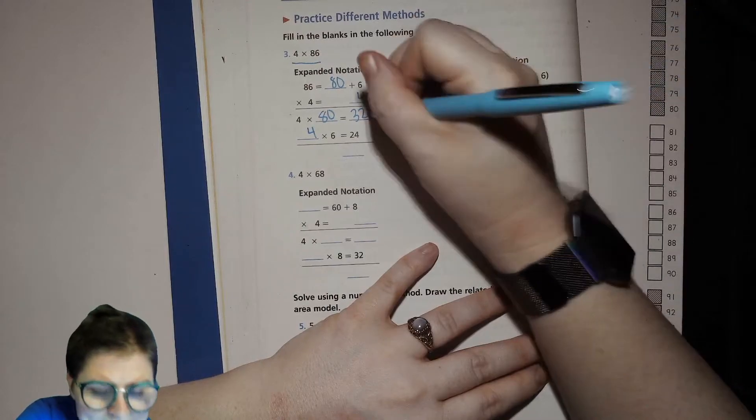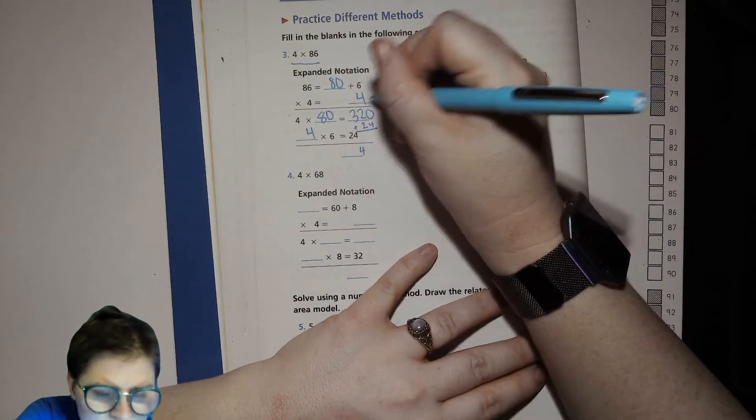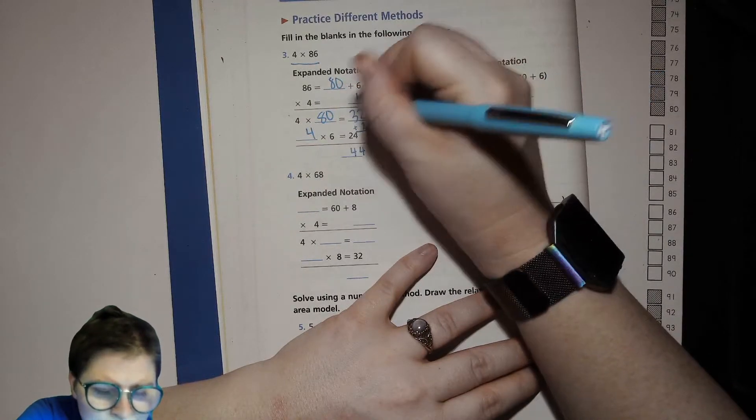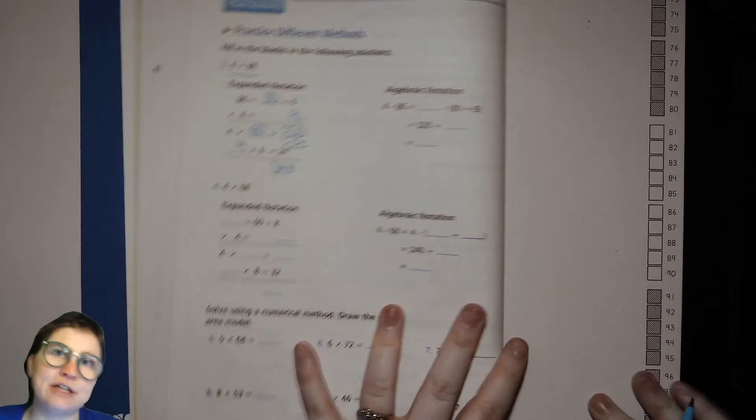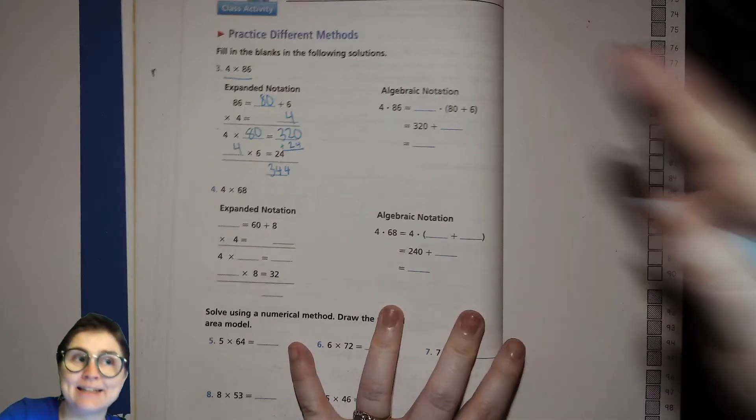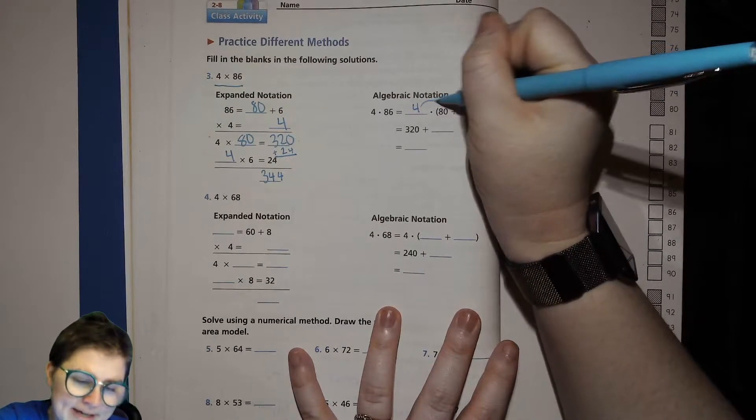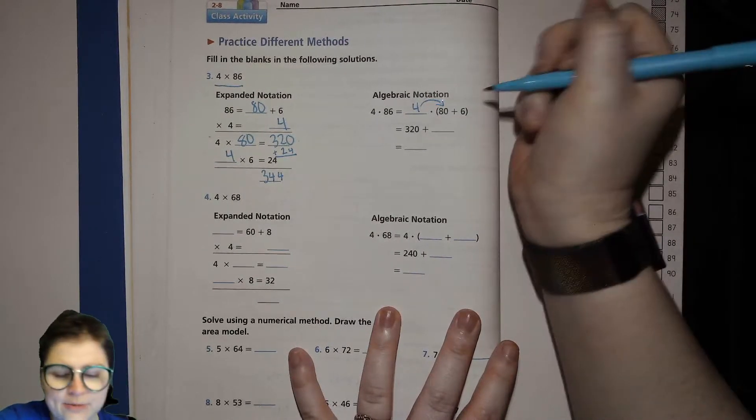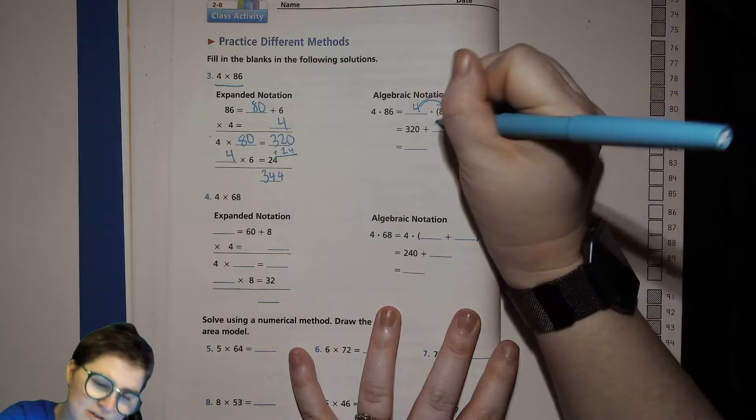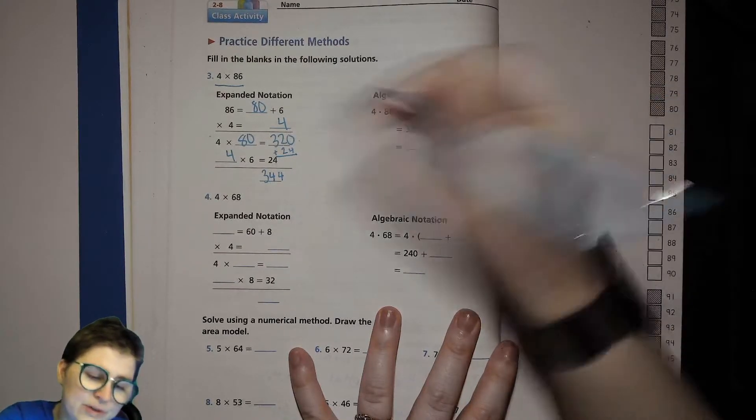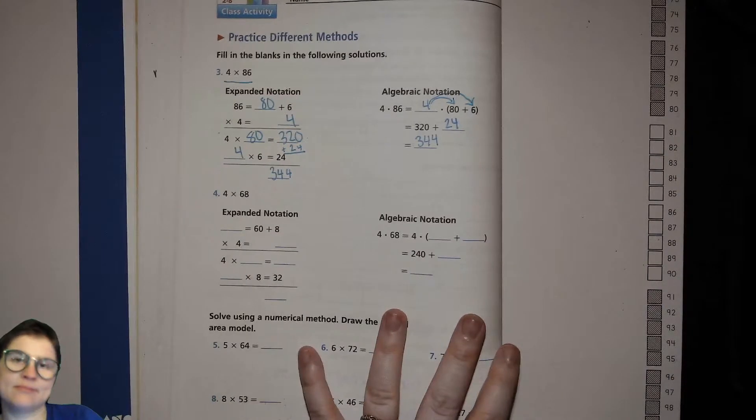And then we're going to add those up. Now I wish they had lined this up nicer, so I'm just going to put 24 right there so I don't mess it up. 0 plus 4 is 4, 2 plus 2 is 4, 3 plus nothing is 3. Now the algebraic notation, remember we're talking about passing things out to everybody. 4 times 86, we'll have our 4 right here and we're going to pass that to the 80, we'll get the 320. Continue passing it on to the 6, 4 times 6 is 24. Add those up, we just did that a second ago. 344.